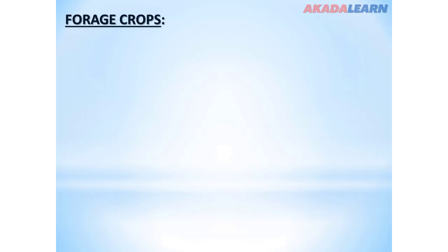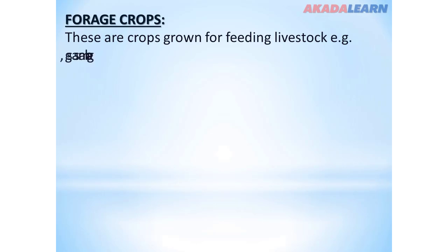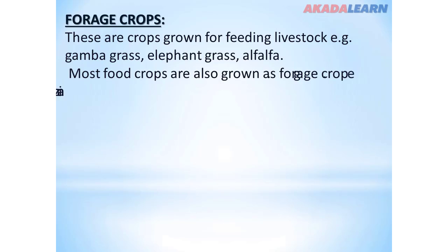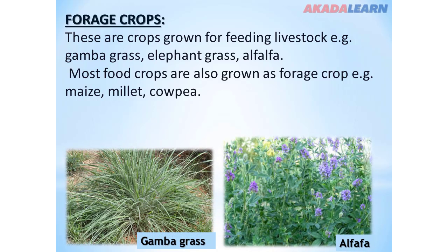Then we have the forage crops. Forage crops are grown for feeding livestock. Examples include gamba grass, elephant grass, and alfalfa. Most food crops are also grown as forage crops; examples include maize, millet, cowpea, and guinea corn.